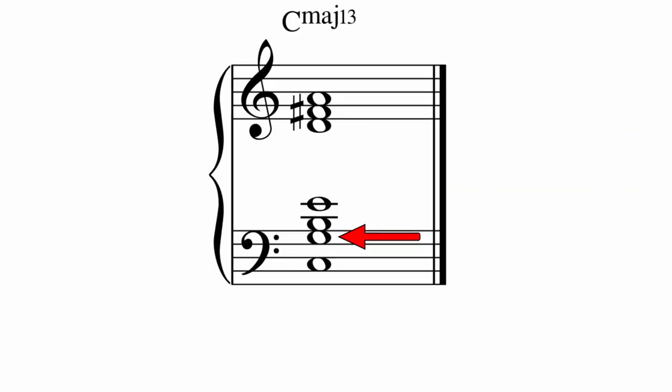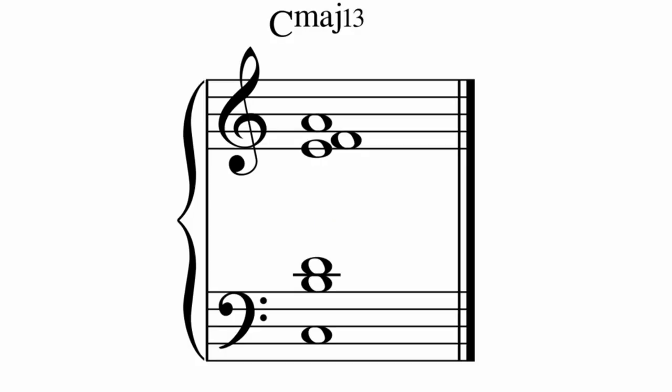And we can add the 5th if we really want to get to 7 pitches. That's all of the pitches of the C Lydian scale. You've probably noticed that I haven't used the natural 11th or 4th in any of the chords so far. Traditionally, that pitch is left out because of the dissonance it creates against the 3rd.